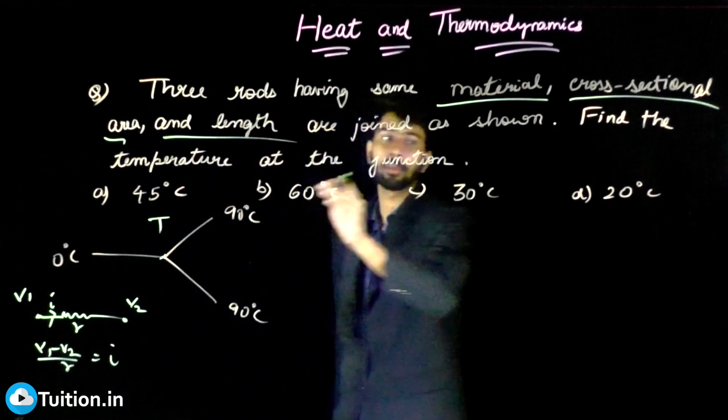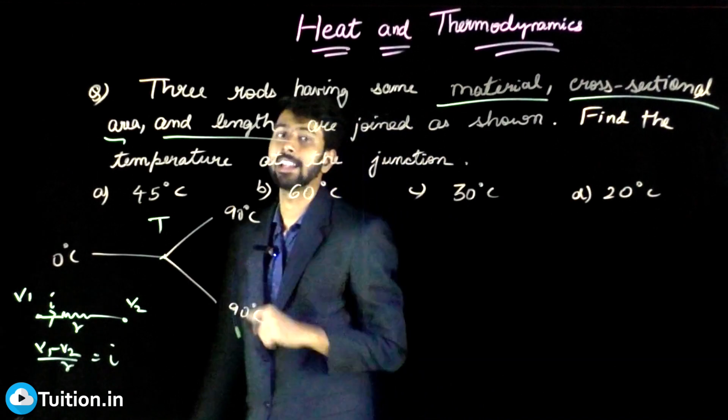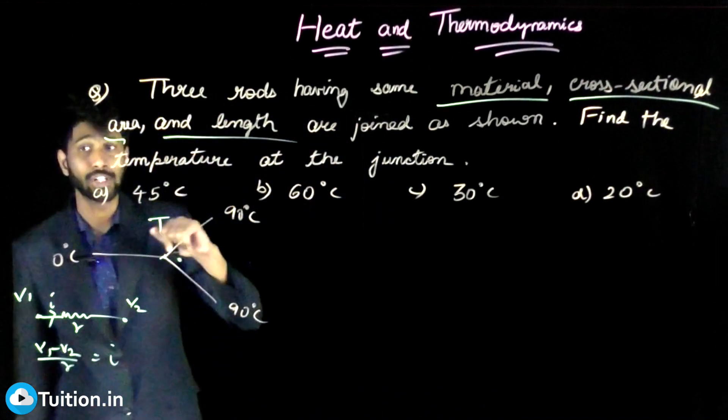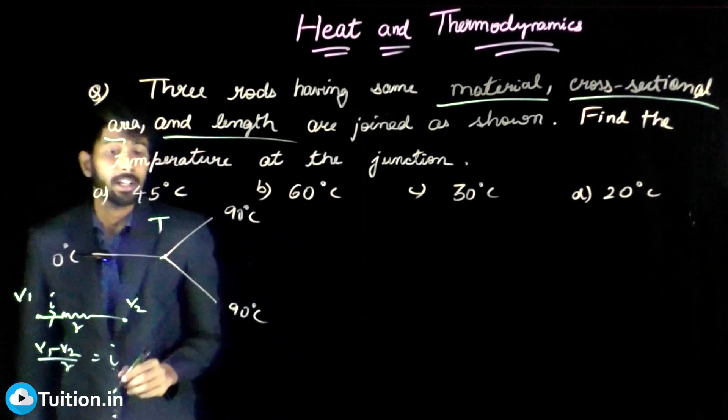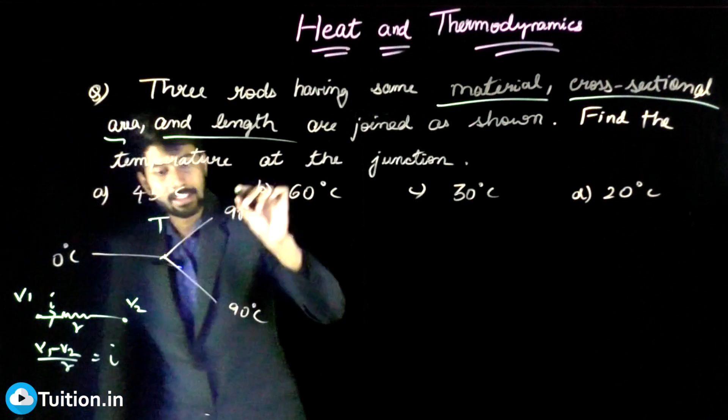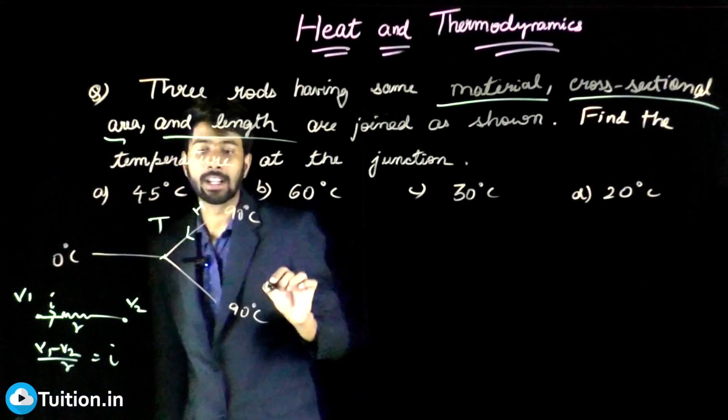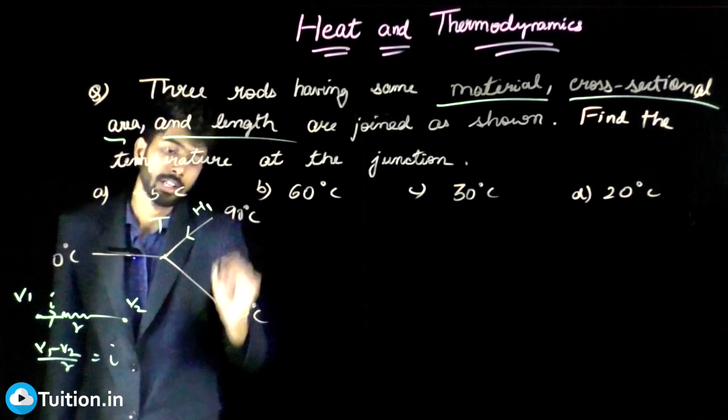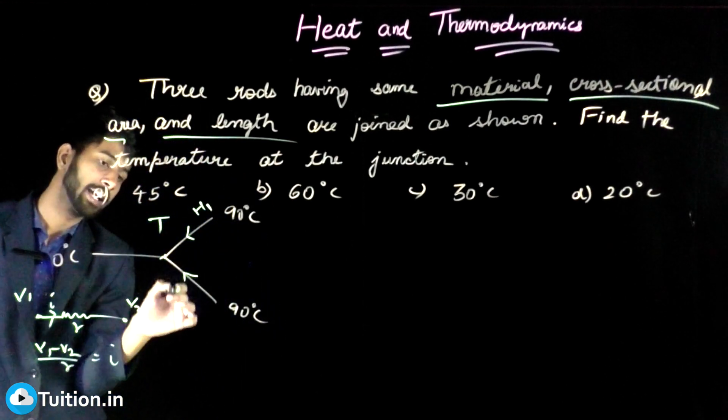It's very much evident from the options also that T will be less than 90. So if it is less than 90, there will be some heat current H which will flow in this direction. Let's call it H1. There will be some heat current H2...